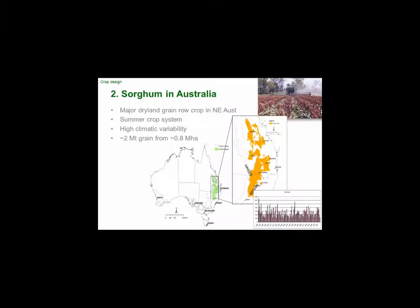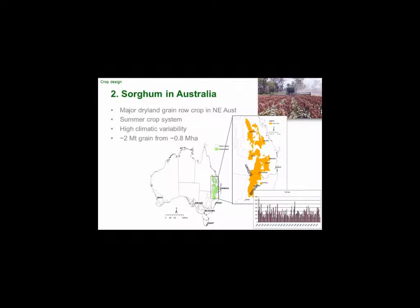Sorghum in Australia — I'll spend ten seconds on this. You know where the northern grains belt is, you know the sorts of rainfall — a couple of million tonnes, a bit less than a million hectares, and extremely high climatic variability. So you've got this notion of risk around water and incidence of stress in a crop; it's prevalent and a major factor in the summer climate.